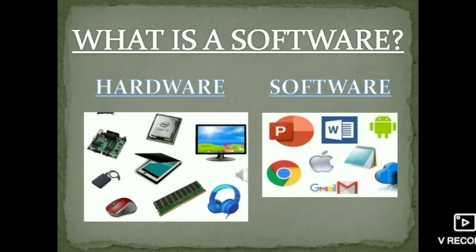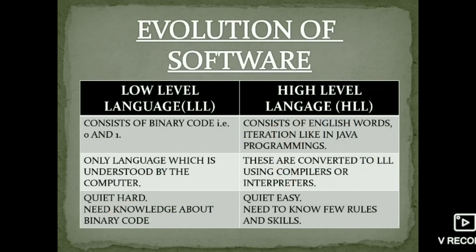First of all, what is software? You might have heard the words hardware and software. Hardware refers to the physical elements of a computer — the mouse, switchboard, PC, CD — things you can touch. Whereas software is a virtual element of a computer, for example Google, Gmail, apps. This is the difference between hardware and software. Software, or apps, consist of programming language.